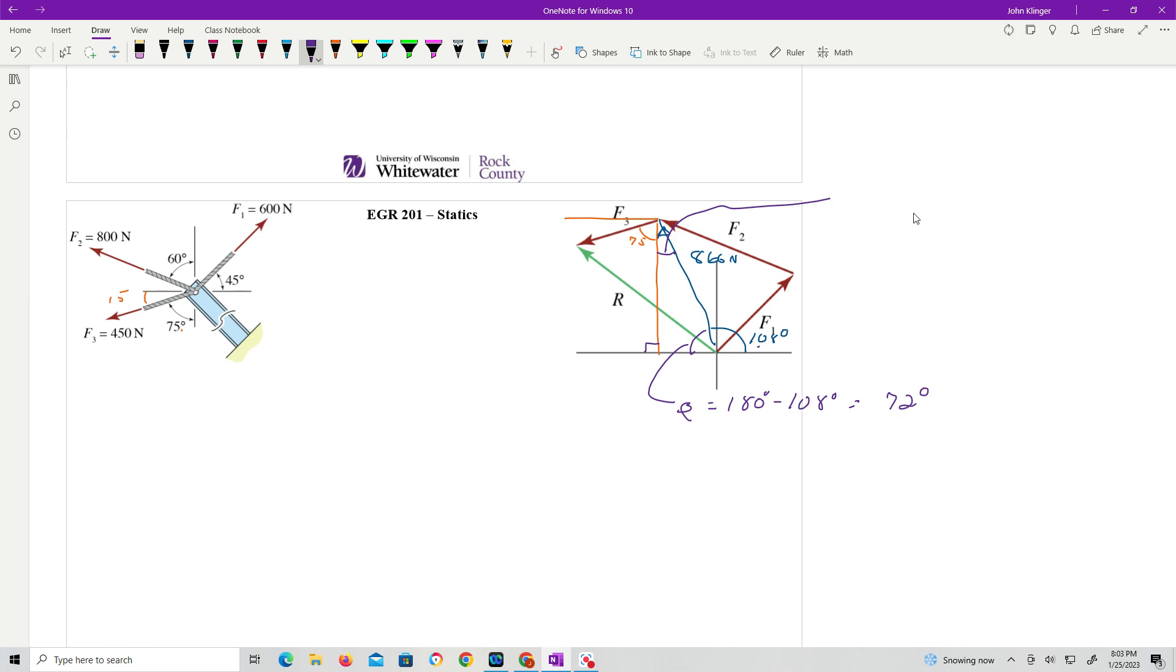So now I will know this angle. Also, that one is, again, 180, right? Minus 90 minus 72 degrees, which is equal to 18 degrees. Okay. So that's 18. So my total included angle here is 75 plus 18 equals 93 degrees.